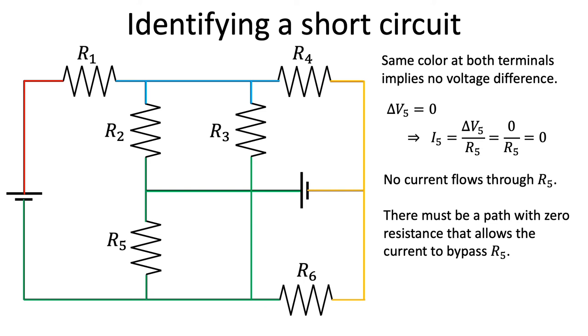Although a battery does not obey Ohm's law, we can use a similar argument to show that when a battery has the same color at both terminals, there must be a short circuit.